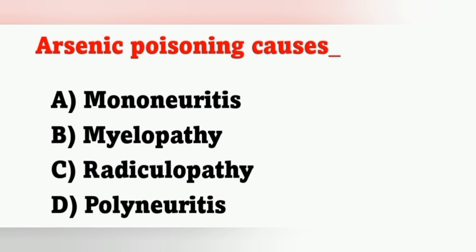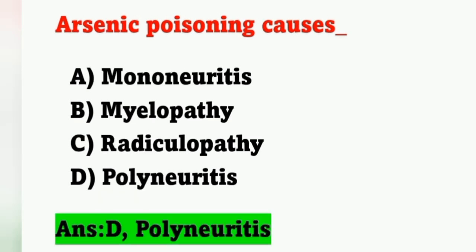Next question: Arsenic poisoning causes — options: option A, mononeuritis; option B, myelopathy; option C, radiculopathy; option D, polyneuritis. Arsenic poisoning causes polyneuritis. Option D is the correct answer.